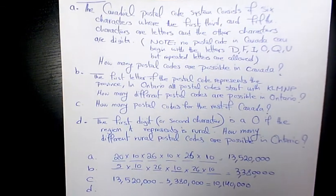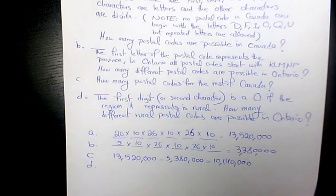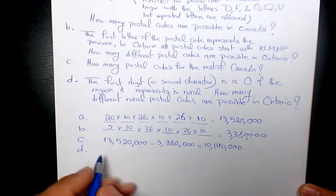Part D, the first digit or the second character is a 0, which is zero. If the region it represents is rural, how many different rural postal codes are possible in Ontario?